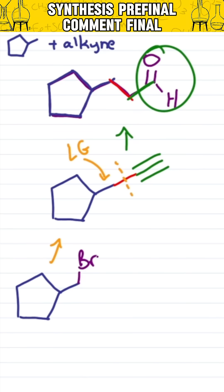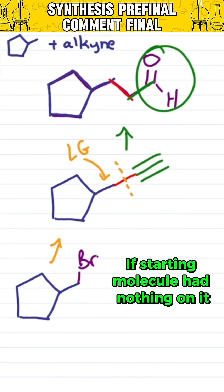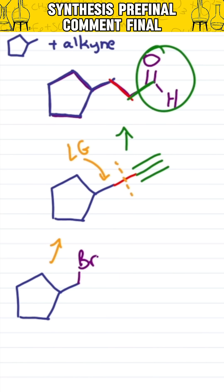Well where did that bromine come from? If my starting molecule had nothing on it, I would have had to use the something from nothing synthesis pattern, which is radical halogenation. But the bromine would have gone here, which means I need my move the functional group pattern, a series of addition and elimination.